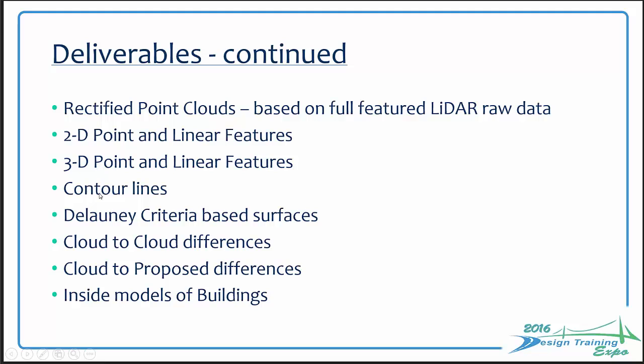Contour lines: if a client says they want half-foot contour lines on a large site with a lot of terrain, you're going to get into DWGs or DGNs that are massive. Versus carrying a Civil 3D object or a Geopack surface where the triangulation forms these but doesn't have to carry the data. When you talk to clients and they say they want a half-foot contour drawing, if you don't get this kind of stuff straight, you're going to have an awful hard time delivering on a large area. Also be aware of things like cloud-to-cloud differences or cloud-to-proposed differences — and remember Delaunay criteria-based surfaces where you can't have overlapping Z.